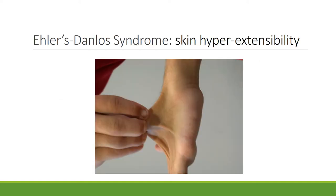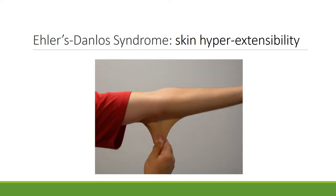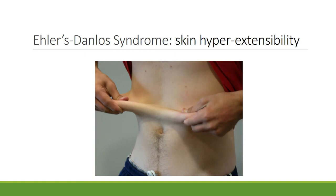This picture shows hyperextensibility of the skin on the back of the hand. This picture shows hyperextensibility of the skin at the elbow. The reason for this is that these individuals have extra elastic fibers in their skin.